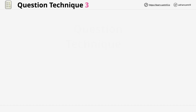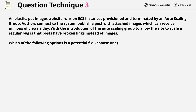This is the question we're going to evaluate in this lesson. An elastic pet images website runs on EC2 instances provisioned and terminated by an auto-scaling group. Authors connect to the system and publish posts with attached images, which can receive millions of views a day. With the introduction of the auto-scaling group to allow the site to scale, a regular bug is that posts have broken links instead of images. Which of the following options is a potential fix?